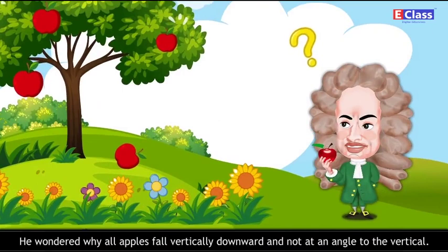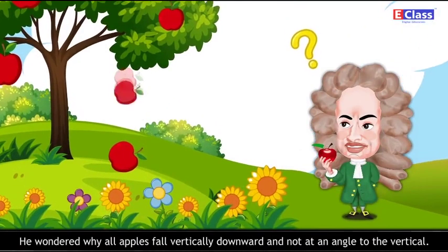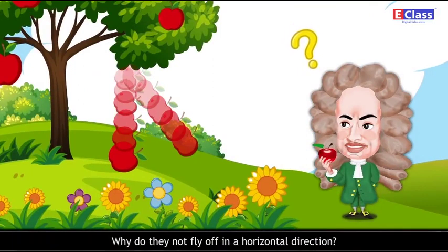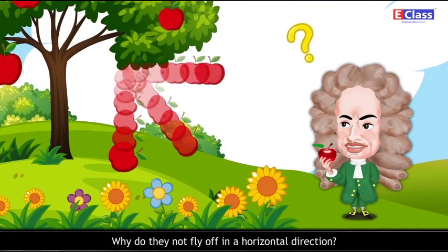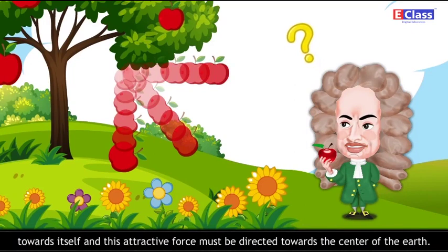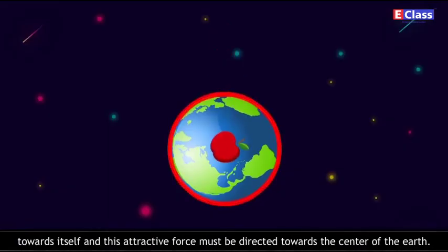He wondered why all apples fall vertically downward and not at an angle to the vertical. Why do they not fly off in a horizontal direction? After much thought, he came to the conclusion that the earth must be attracting the apple towards itself and this attractive force must be directed towards the center of the earth.